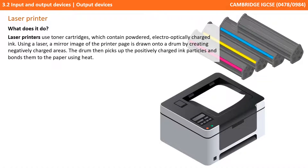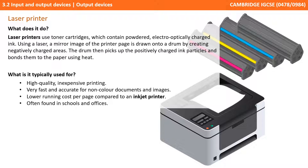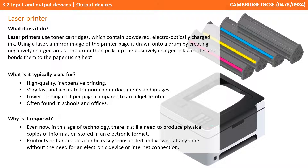Laser printers are different in that they use a toner cartridge containing powdered, electro-optically charged ink. Using a laser, a mirror image of the printer page is drawn onto a drum by creating negatively charged areas. The drum then picks up the positively charged ink particles and bonds them with a sheet of paper using heat. These produce high quality but inexpensive printing. They are very fast and accurate for non-colour documents and images, with a lower running cost per page compared to an inkjet printer, so these are often found in non-personal areas like schools and offices. The reason they're required is similar to inkjet printers — there's still a need to print out physical copies of information held in electronic format.